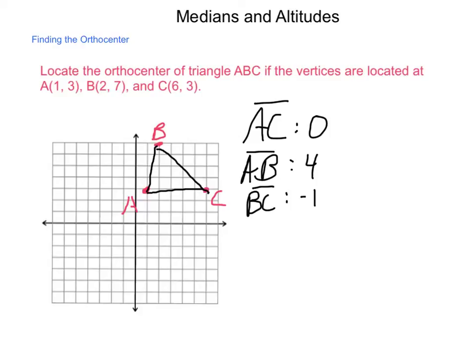Now, the line that we need has to be perpendicular to these. Well, perpendicular to a 0 slope is an infinite slope. So what would be the vertical line that passes through B? That's going to be X equals 2. That's our first altitude that gets drawn here.